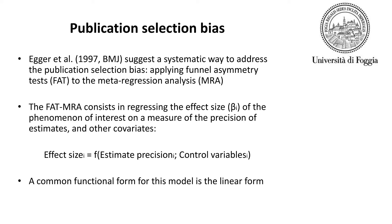A systematic way to address the problem of publication selection bias is to regress the effect size of the phenomenon of interest on a measure of the precision of estimates, their standard errors, and other co-variates.